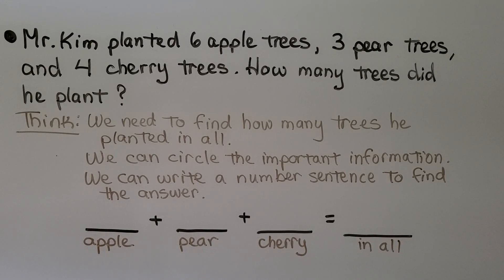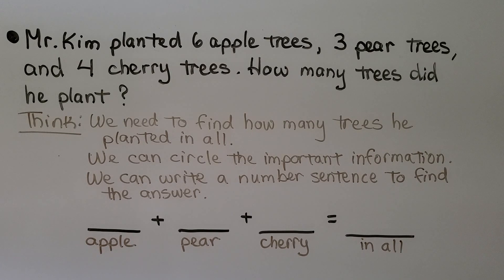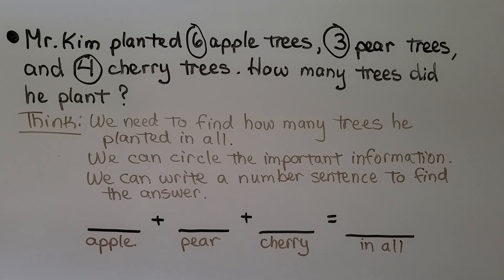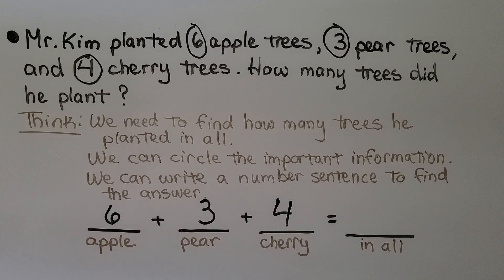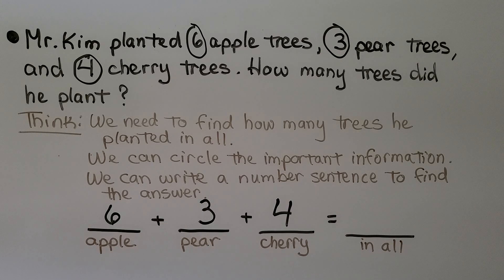Mr. Kim planted six apple trees, three pear trees, and four cherry trees. How many trees did he plant? We circle the important information: six, three, and four. We write a number sentence. Do you see two addends we can add together? I see a six and a four — that makes a ten. Then we have three, so ten plus three equals thirteen. Mr. Kim planted thirteen trees in all.